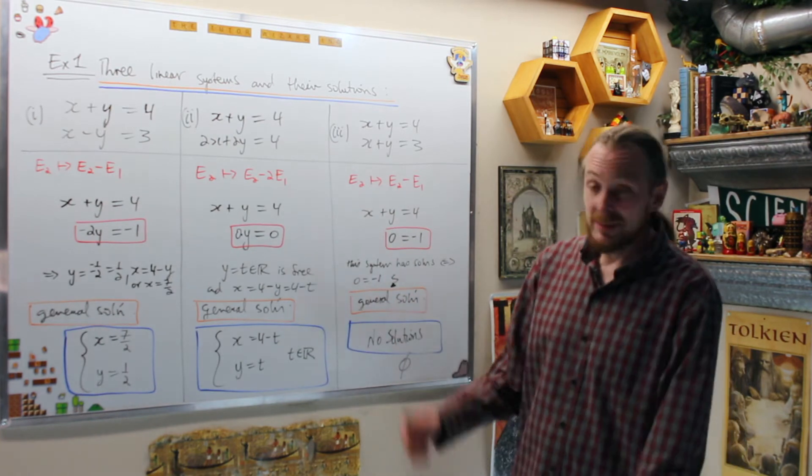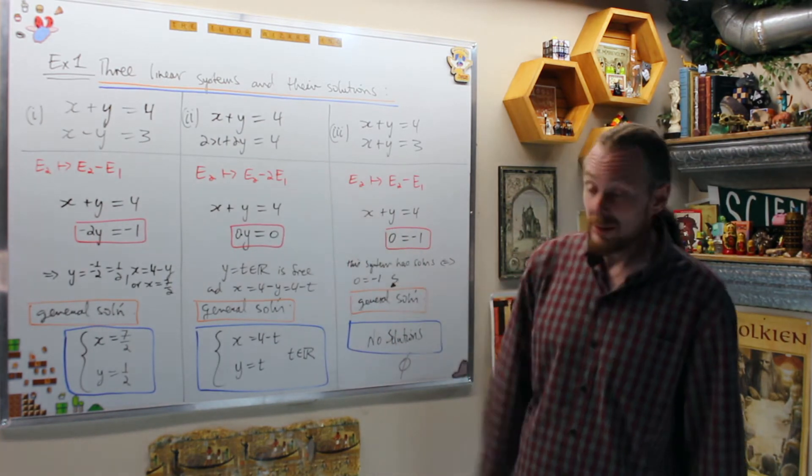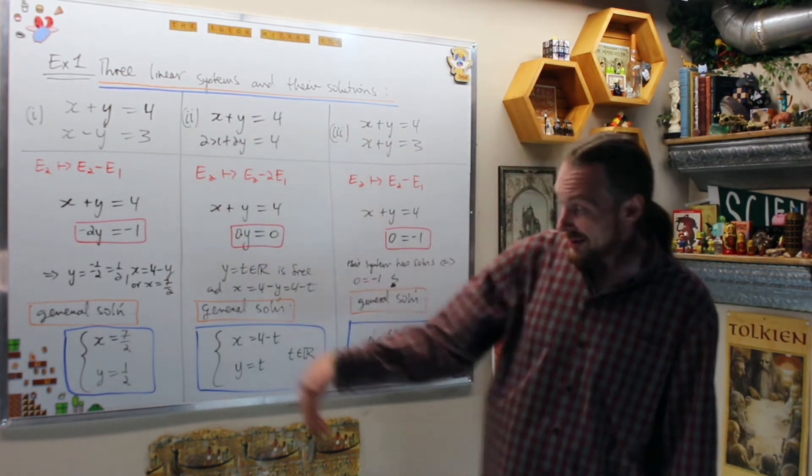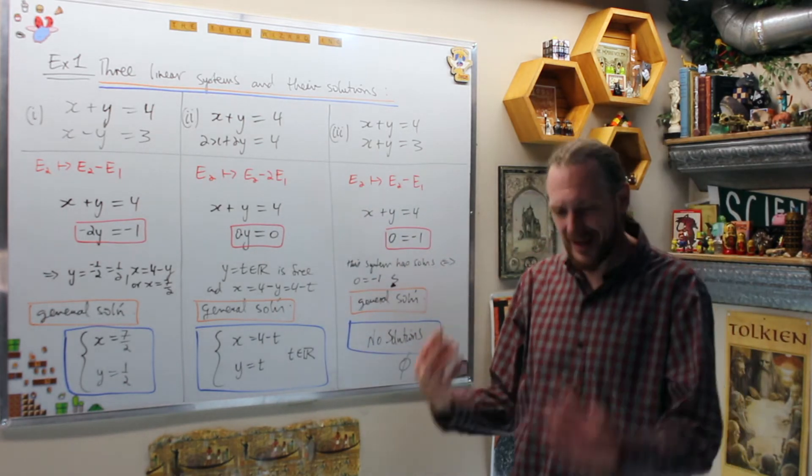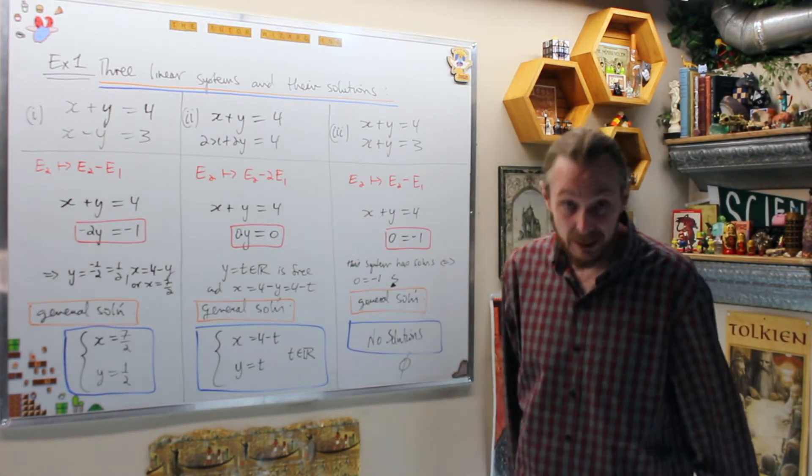Let's look at an example: three linear systems and their solutions. What we're going to do is look at the case when we have one solution, infinitely many solutions, and no solutions, and try to find an idea of how we're going to systematically do this.